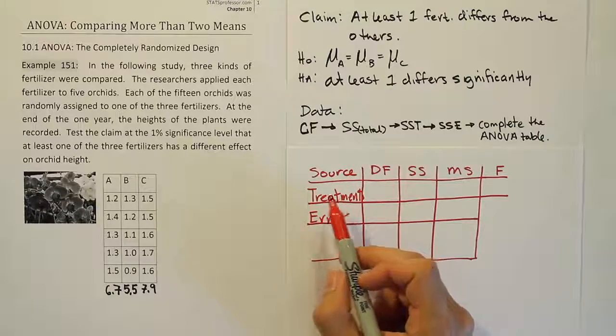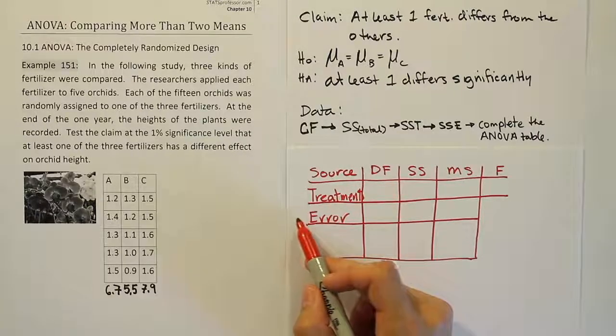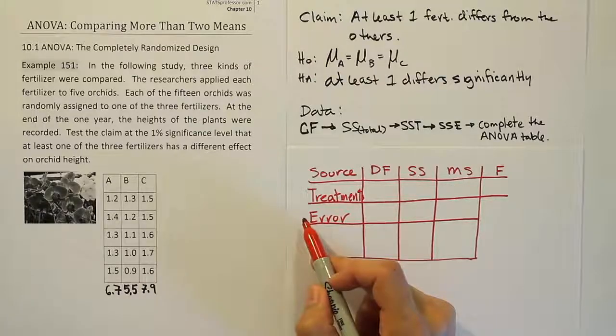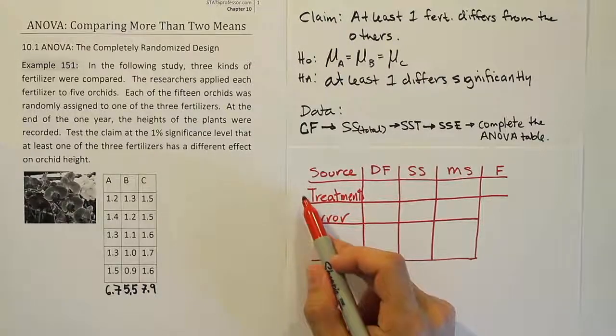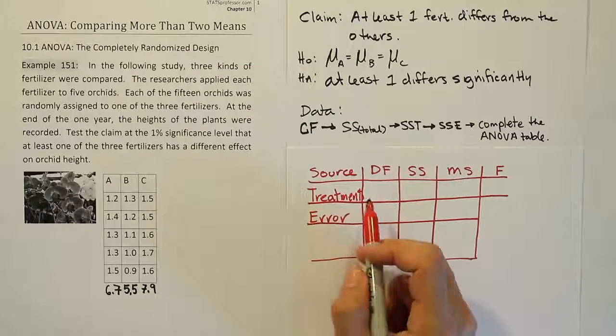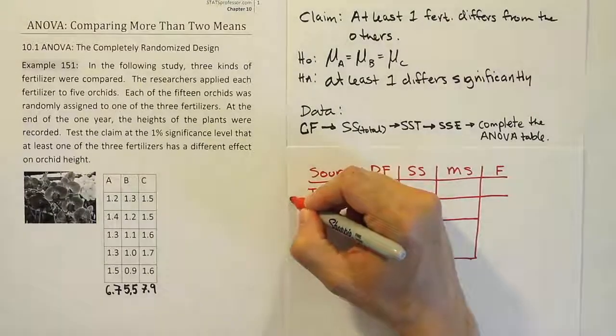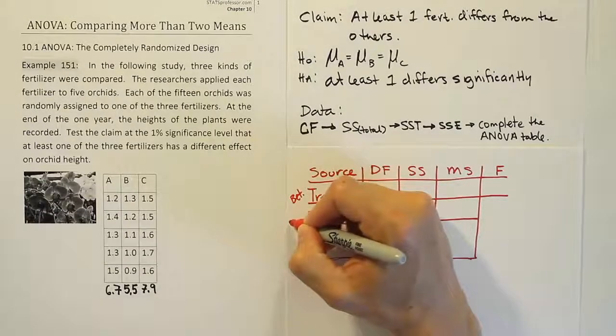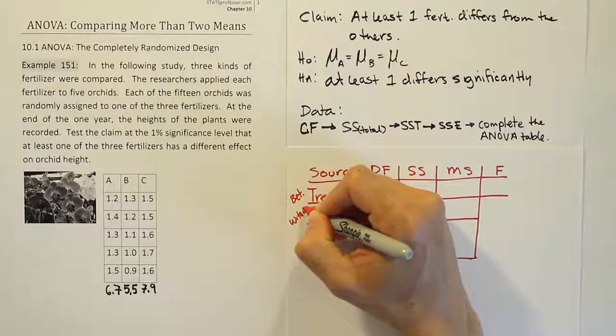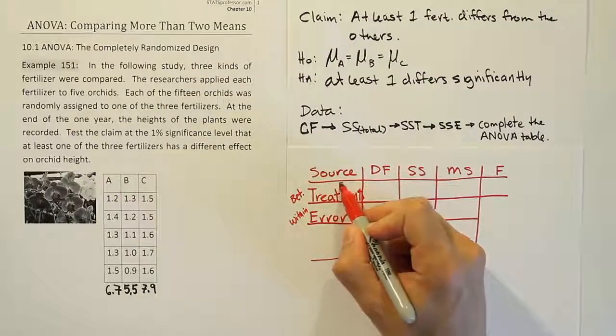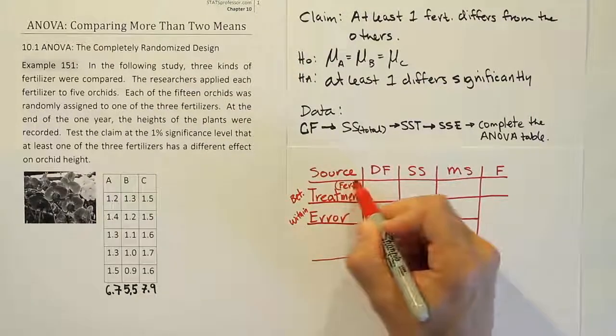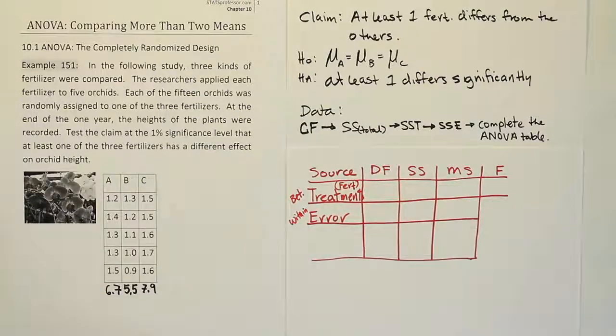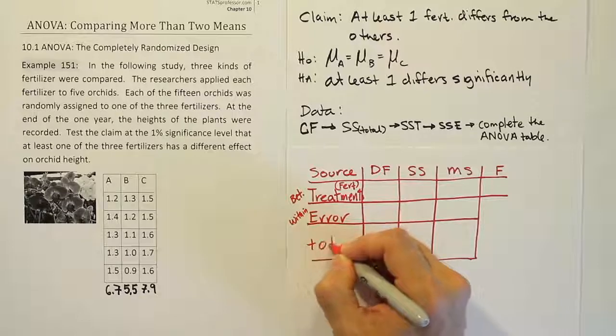You'll sometimes also see this as between versus within. They write that, too, in a lot of computer programs. Between versus within. So remember, you could write that as well at the top here. You could say between and within, right? And then, of course, remember, this is also a fertilizer column for us, right? And our problem is the fertilizer. So there's a lot of different ways to label these two things. This bottom one is always called the total, right?